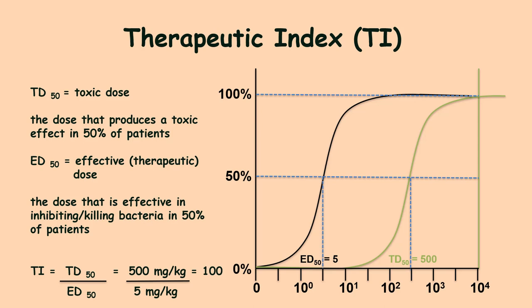The two main components are effectiveness in treating the disease and selective toxicity. The therapeutic index uses these two components to determine the safety of a drug. It compares the concentration that produces a toxic effect on patients versus the concentration that is effective in treating the disease. The goal is for the drug to have a very high therapeutic index, meaning the toxic dose concentration is much higher than the effective dose concentration.